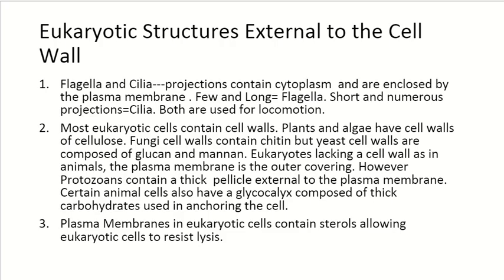Eukaryotic structures external to the cell include flagella and cilia. These projections contain cytoplasm and are enclosed by the plasma membrane. Flagella are few but very long, while cilia are short and numerous. Both are used for locomotion. Most eukaryotic cells — including plants and algae — contain cell walls. Plants and algae have cell walls of cellulose, fungi have cell walls made of chitin, and yeast have walls composed of glucan and mannan.